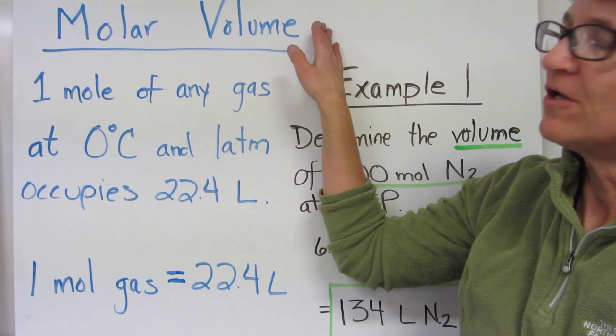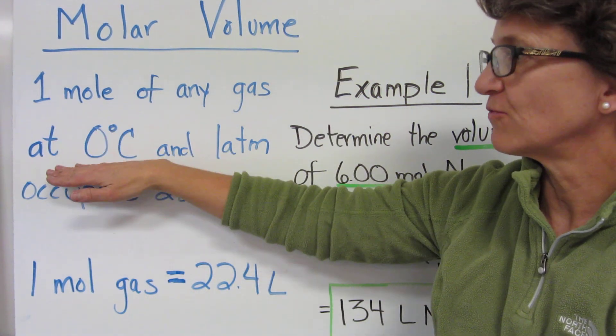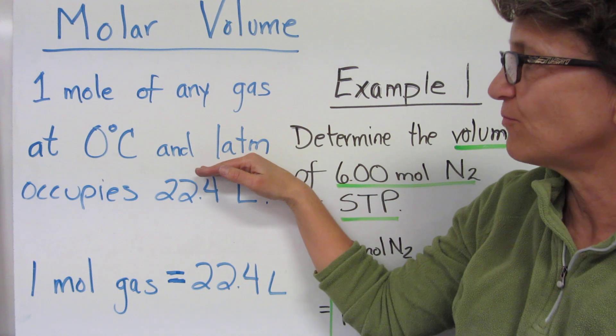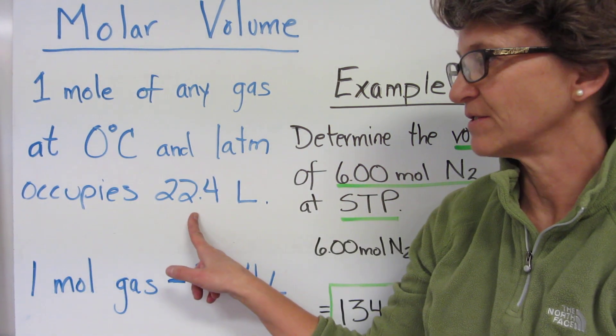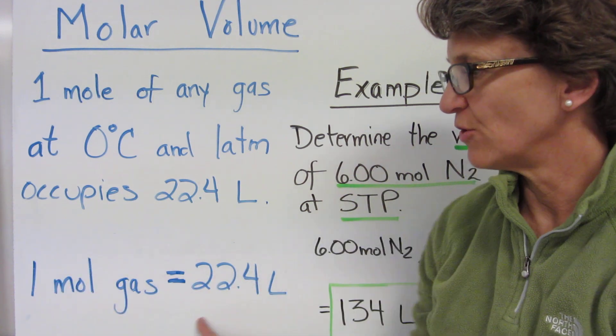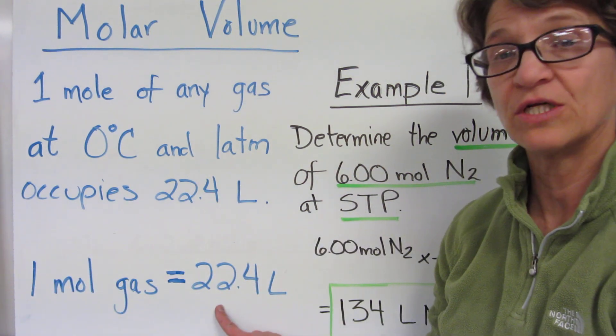Molar volume is defined as one mole of any gas at zero degrees Celsius and one atmosphere of pressure occupies 22.4 liters. So we can use the ratio: one mole of any gas at STP will equal 22.4 liters.